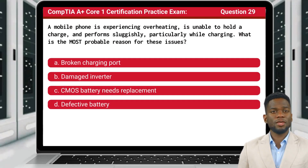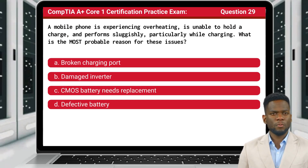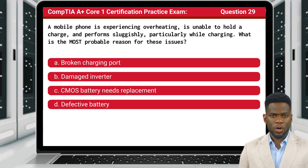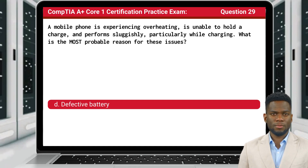Question 29. A mobile phone is experiencing overheating, is unable to hold a charge, and performs sluggishly, particularly while charging. What is the most probable reason for these issues? The answer is D: Defective Battery.